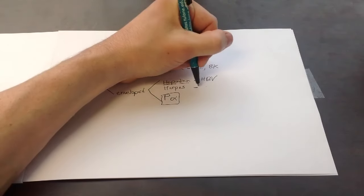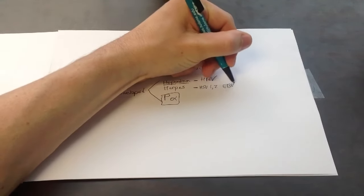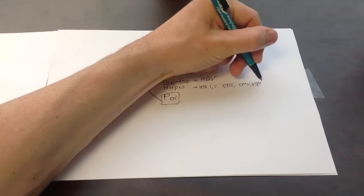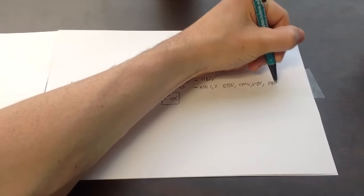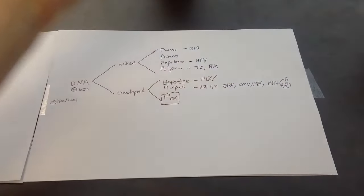Herpesvirus has a bunch of them. We have HSV1 and 2. And then we have EBV. We have CMV. We have VZV. And then we have HHVs 6 and 8. 8 is Kaposi's.